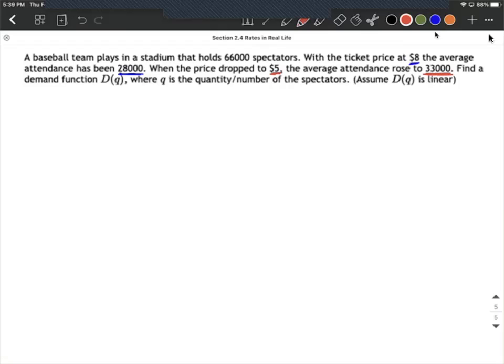And our goal on this is to come up with a demand function D(Q), where Q is going to be the quantity or the number of spectators. And the other important piece of information we know is D(Q) is linear.